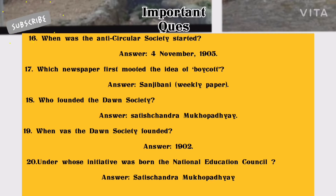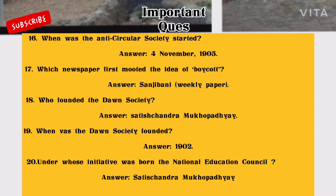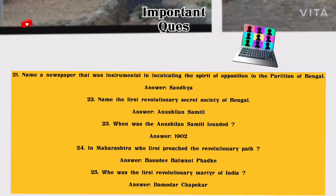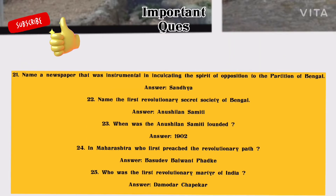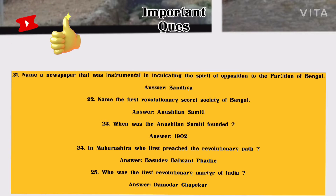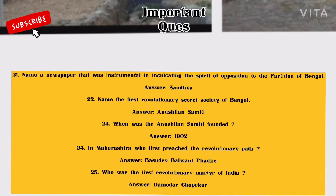Number 19: When was the Dawn Society founded? Answer: 1902. Number 20: Under whose initiative was the National Education Council born? Answer: Satish Chandra Mukhopadhyay. Number 21: Name a newspaper that was instrumental in including the spirit of opposition to the Partition of Bengal. Answer: Sandhya.